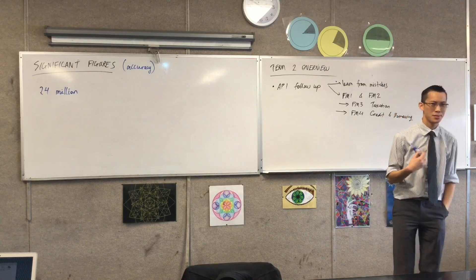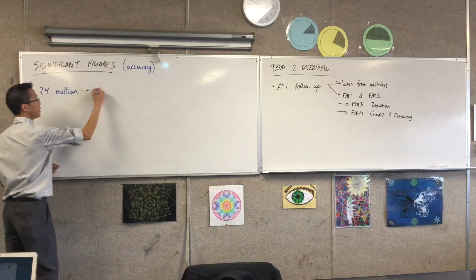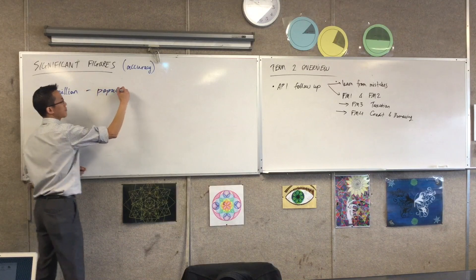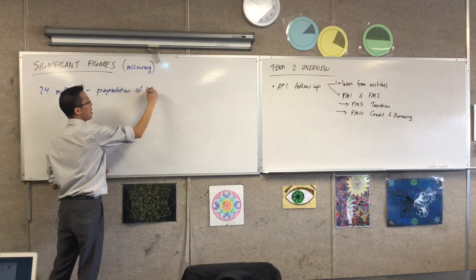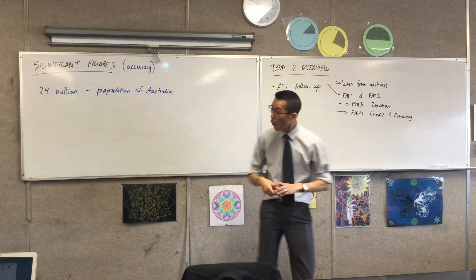Anyone know what it represents? Population of Australia. It is, roughly speaking, the population of Australia. Now, it's pretty short. It would be, mostly, for us, unrealistic to think, oh, there are exactly 24 million people.